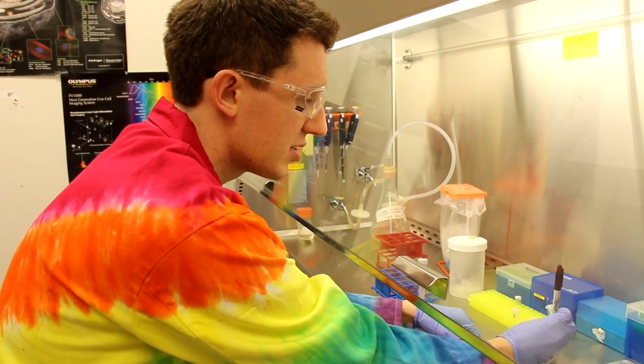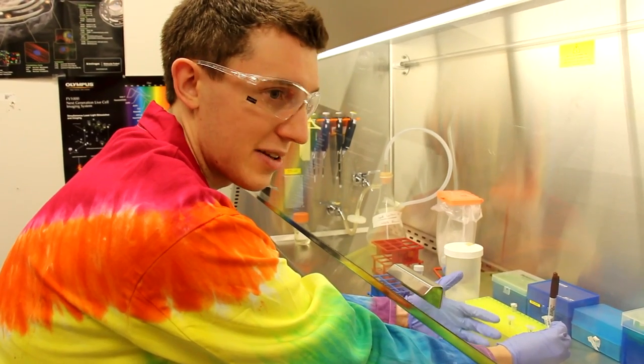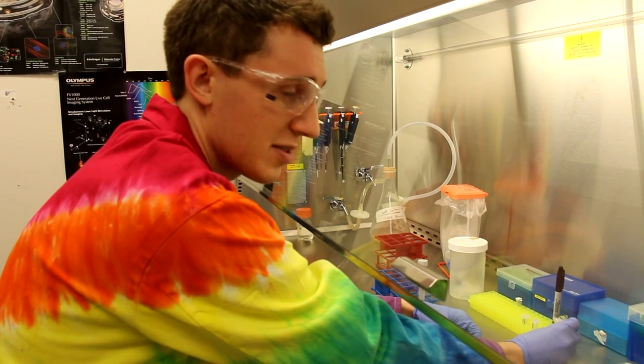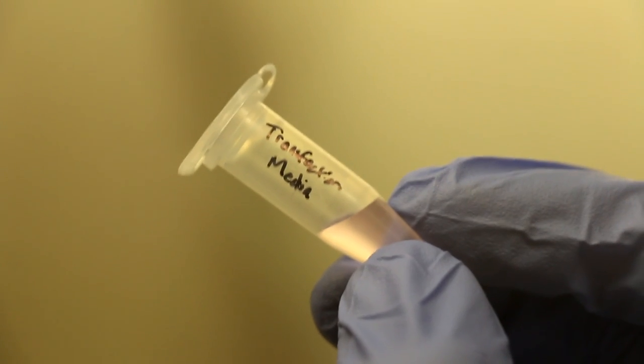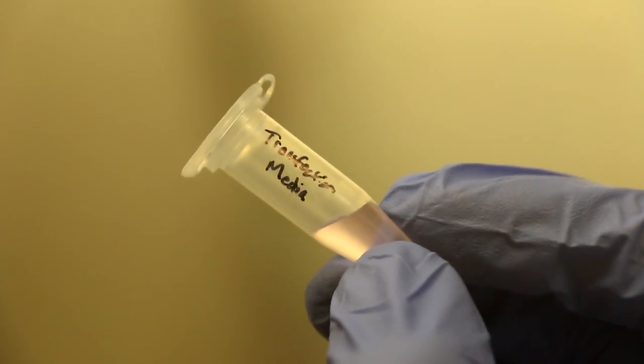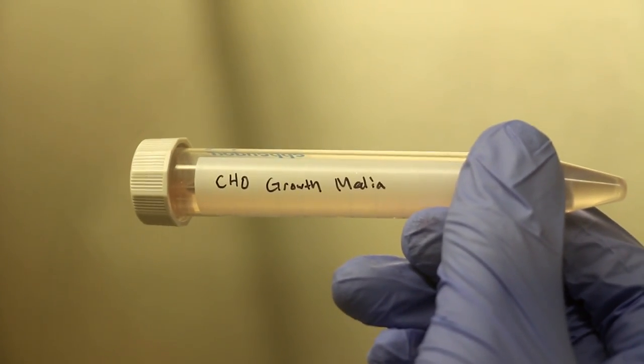Next you'll need a tube of Fujin reagent. We take aliquots as it's a sensitive reagent. Then you'll need a tube of transfection media to perform the transfection reaction, and finally a tube of growth media to mix the transfection reaction in before applying it to the cells.